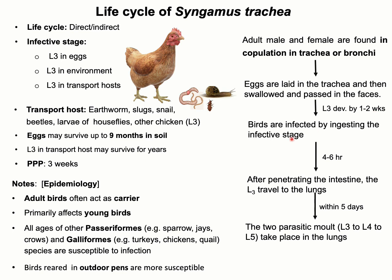The final host — birds of different species — will be infected by ingesting the infective stages mentioned earlier. Afterwards, L3 penetrate the intestinal wall and reach the lungs, where the remaining molting stages occur: L3 to L4, and L4 to L5. Adults will then be found in the trachea, and the female parasite will start laying eggs. The complete life cycle takes around three weeks.